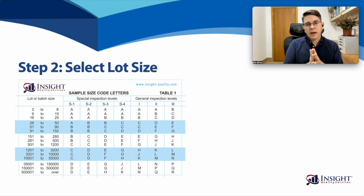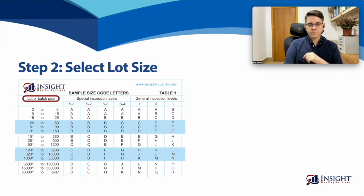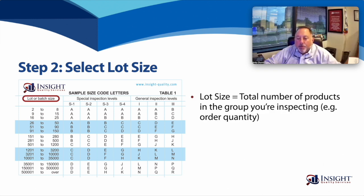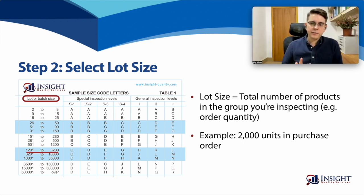In step two, we select our lot or batch size from the left-hand side of the chart. The lot size is the total number of products in the group you're inspecting — generally the same as your order quantity. For example, if you order 2,000 units of your product, whether it's ceramic mugs, standing desks, or something else, you would choose the range from 1,201 to 3,200.